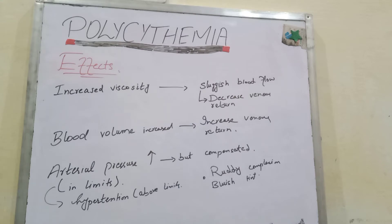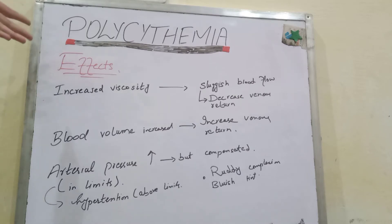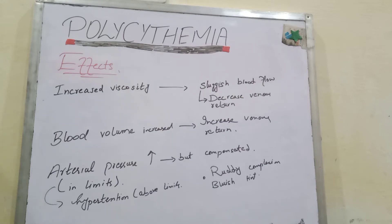The second effect of polycythemia is increased blood volume. Why is blood volume increased? We have read in our previous video that whenever there is a large amount of RBCs, the blood volume will be increased — about twice as much in the case of polycythemia. If blood volume is increased, there will be increased venous return, because a larger amount of blood is flowing.